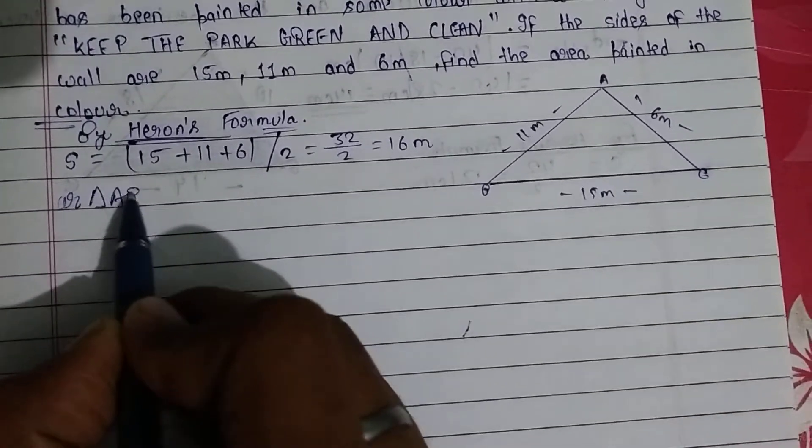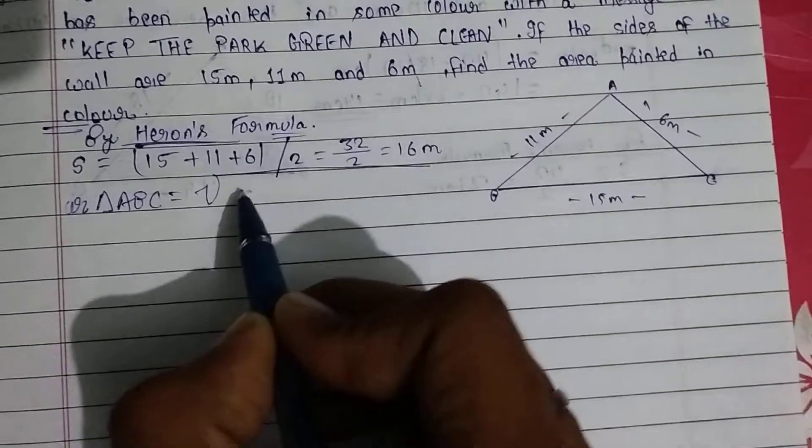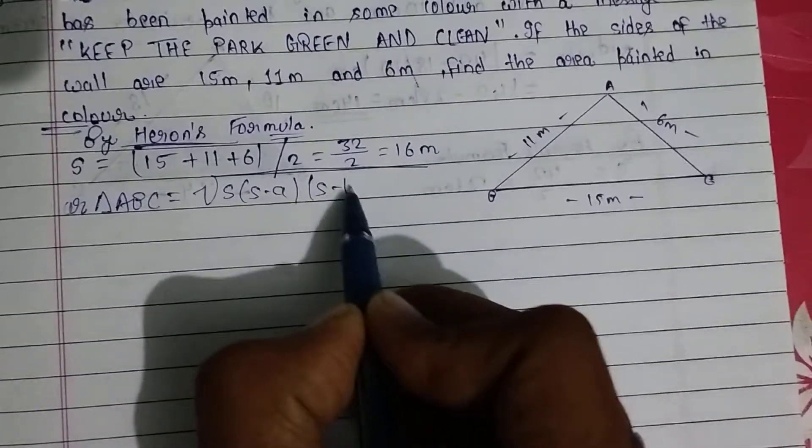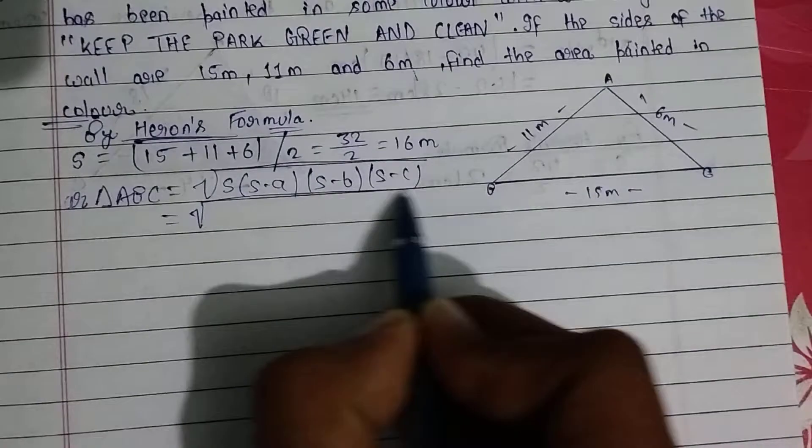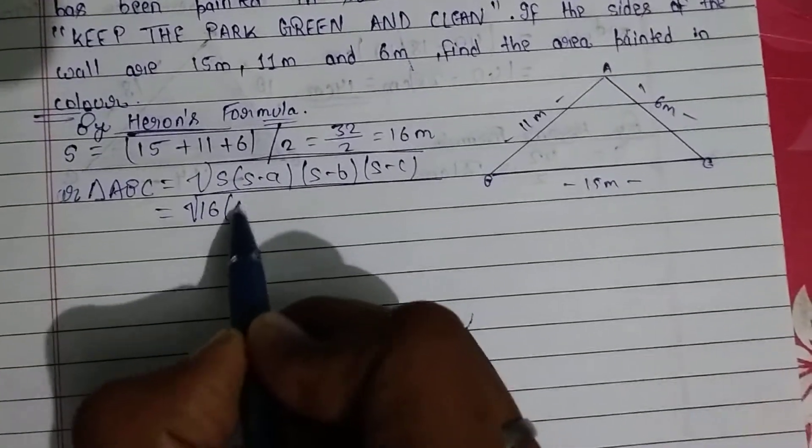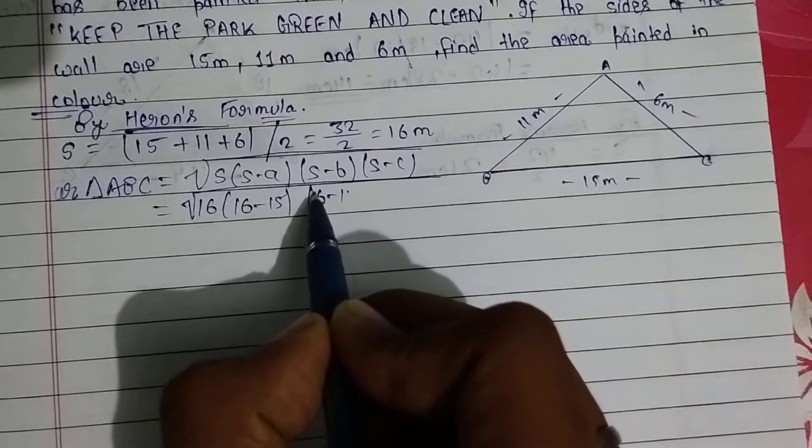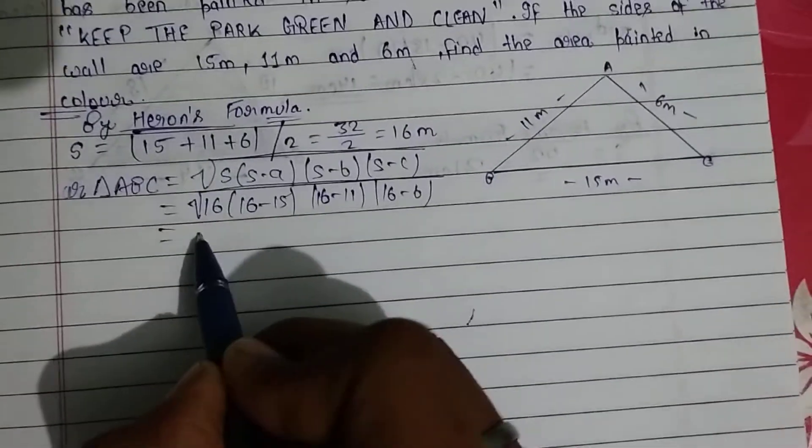Area of triangle ABC equals square root of s(s-a)(s-b)(s-c). Substituting the values: square root of 16 times (16-15) times (16-11) times (16-6), which gives us square root of 16 × 1 × 5 × 10.